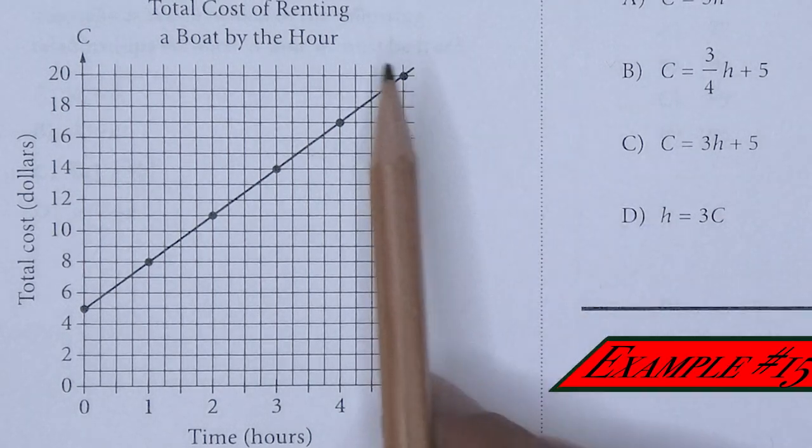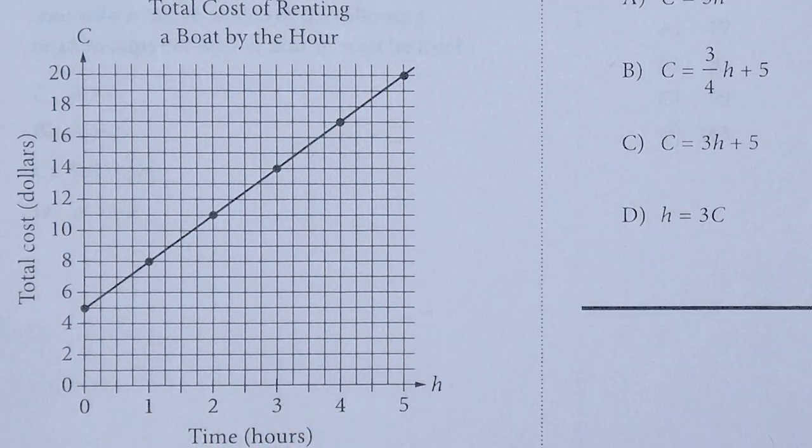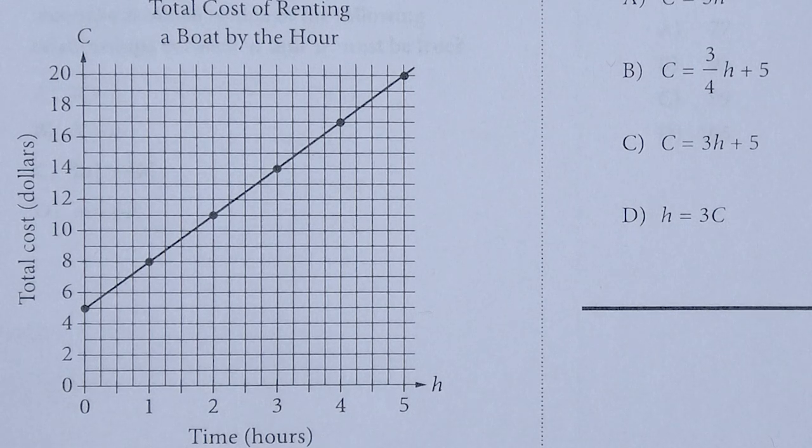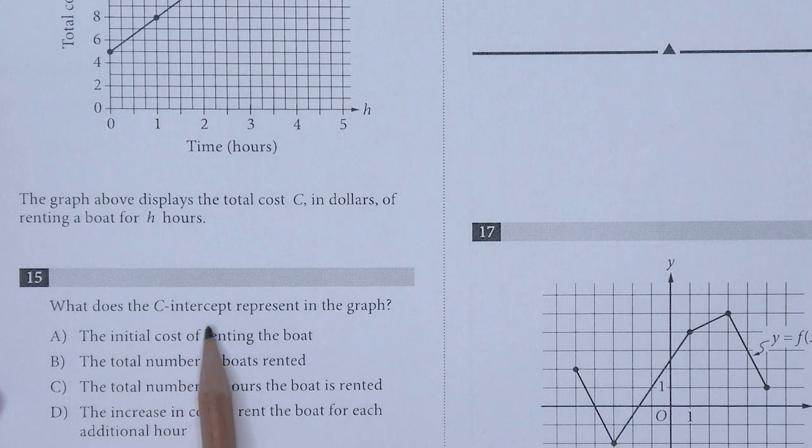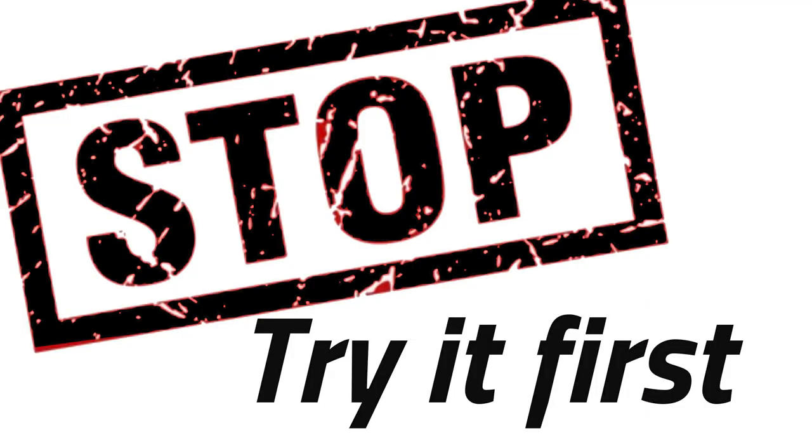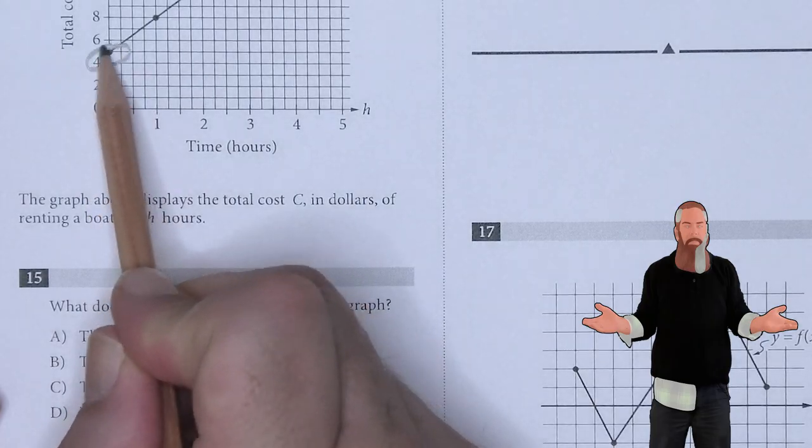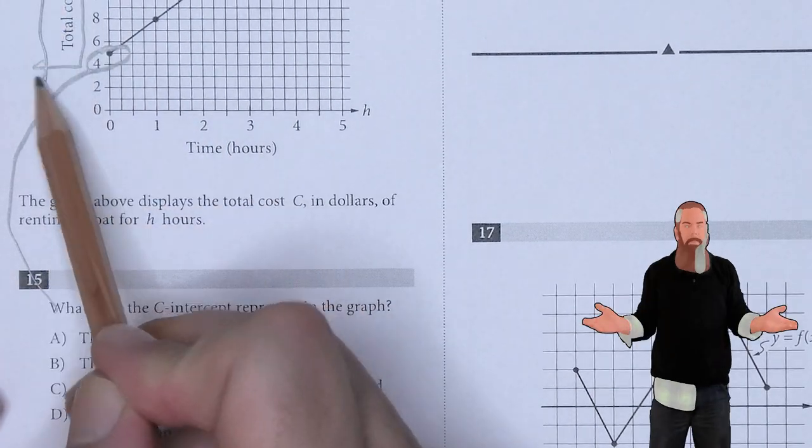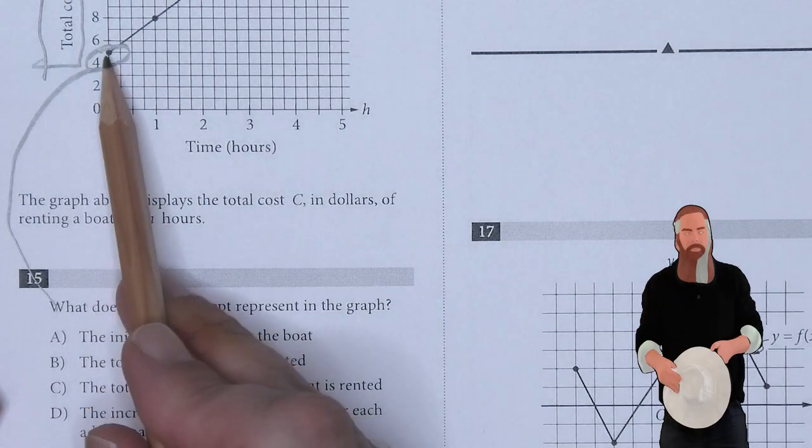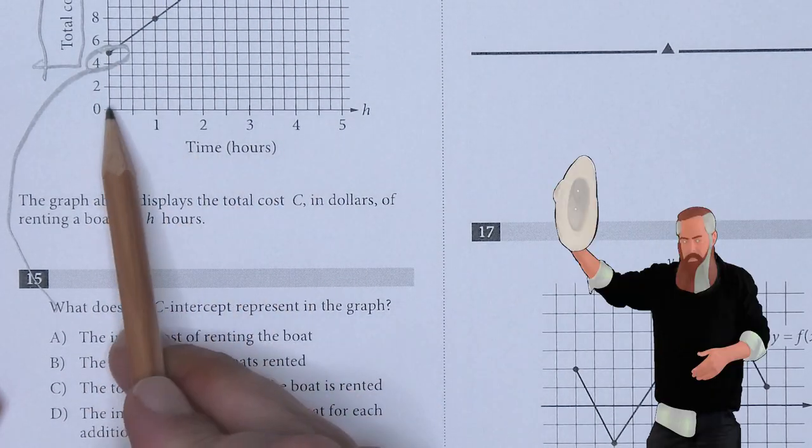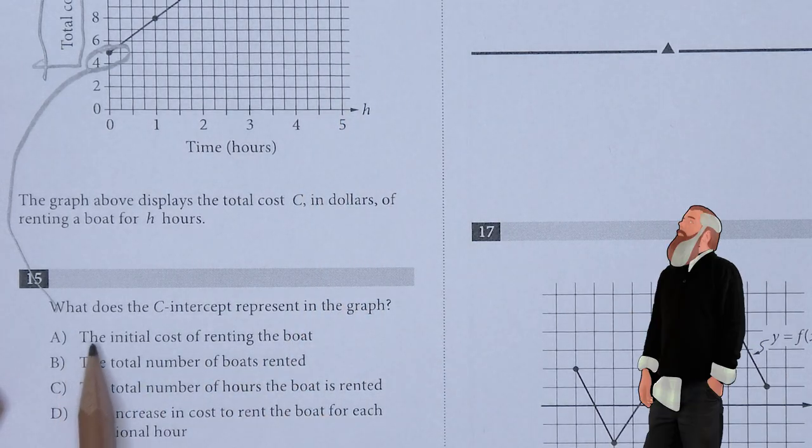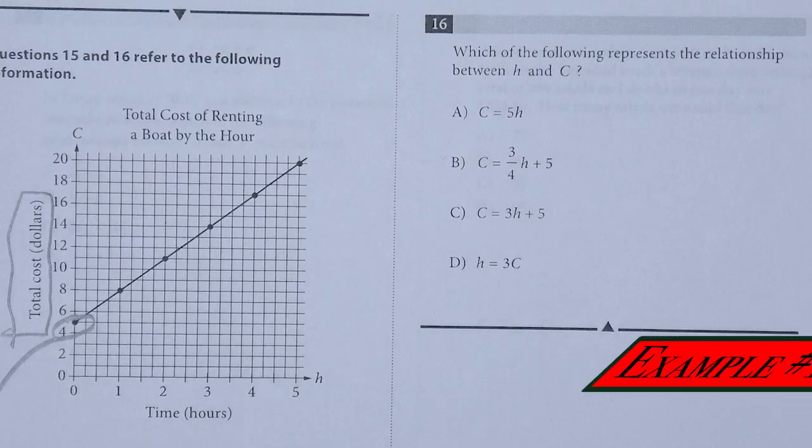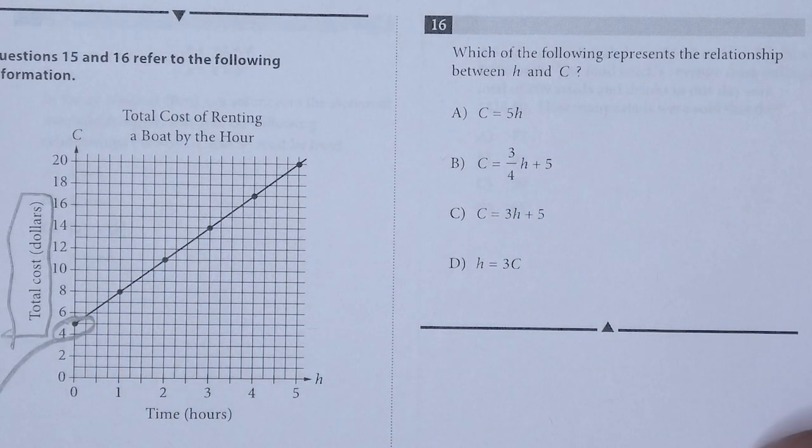For questions 15 and 16, we're going to refer to this graph. It displays the total cost c in dollars of renting a boat for h hours. What does the c intercept represent on the graph? The c intercept, we're looking at this point right here. This represents the total cost in dollars. This is the starting point when h would be zero. So it's the initial cost of renting a boat.